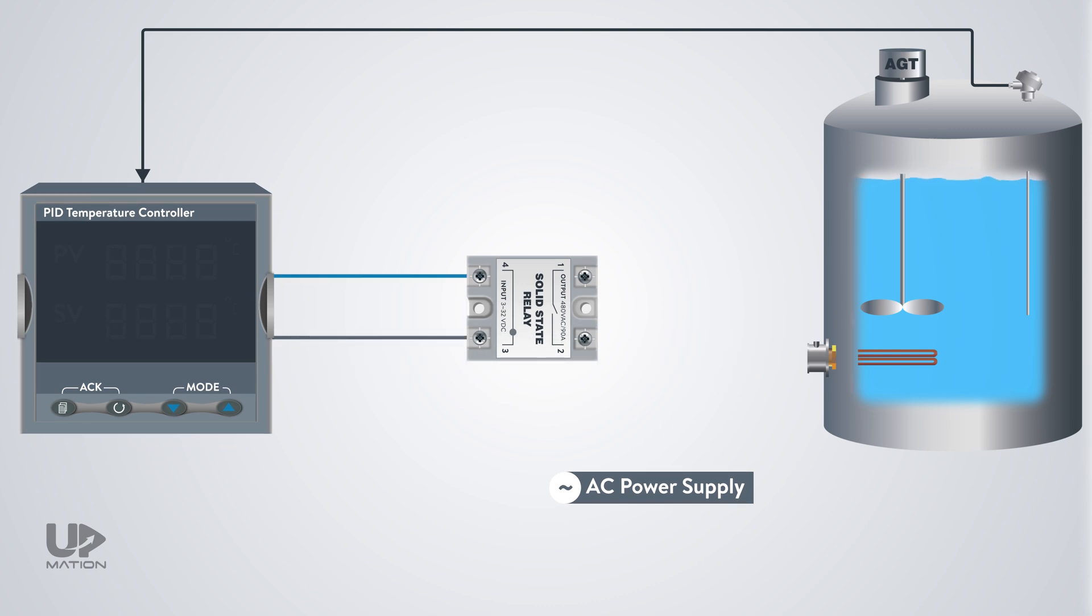So, the PID controller will send the control signal to the primary terminals of the relay and turns on and off the relay output. On the other side, the heater will get its power from the SSR and the AC power source.